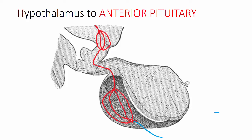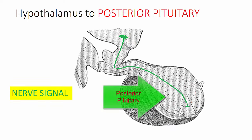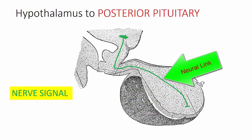The posterior pituitary is controlled by a neural link. The hormones are made in the hypothalamus, travel along nerve axons, and are stored in the posterior pituitary. When needed, the hypothalamus sends a nerve impulse that triggers their release. Antidiuretic hormone and oxytocin are released in this way, and we'll look at those two hormones in our next lecture.